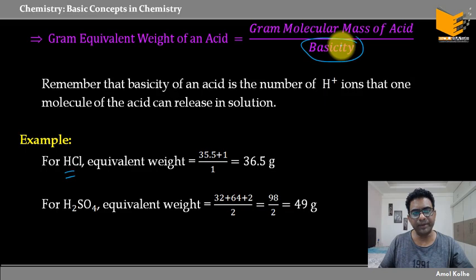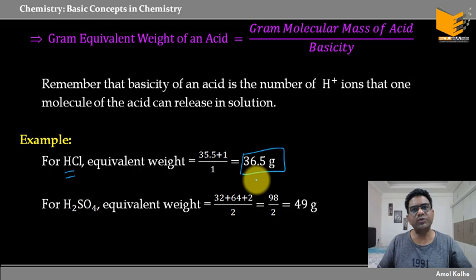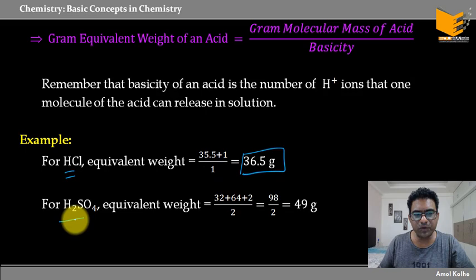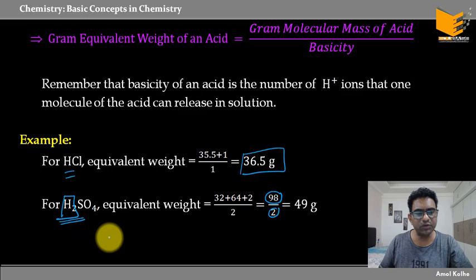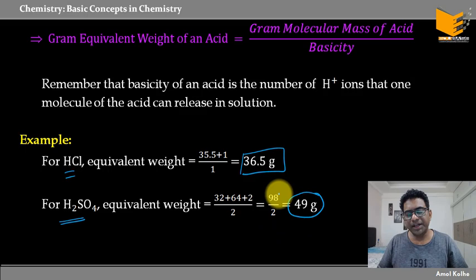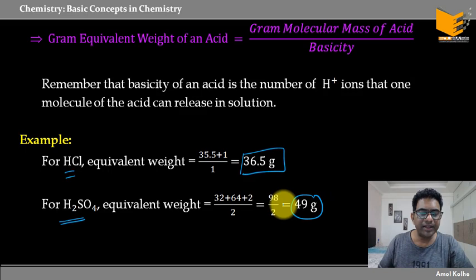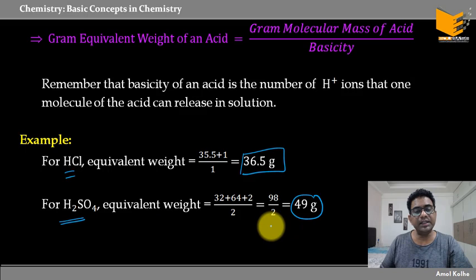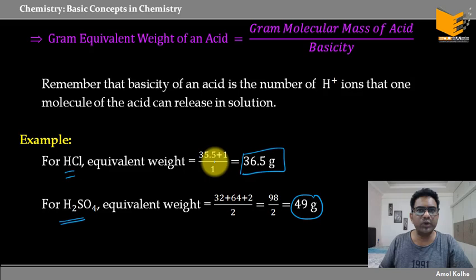Agar valency ya n factor one hai, toh equivalent weight = molecular weight. Lekin H₂SO₄ mein: equivalent weight = 98 / 2 = 49, because H₂SO₄ ki basicity 2 ki hai — it gives 2 H⁺ ions. So it is half of that of molecular weight. Agar basicity 1 se zyada hai, toh equivalent weight will be different from molecular weight; agar basicity 1 ki hai, toh equivalent weight and molecular weight are same.